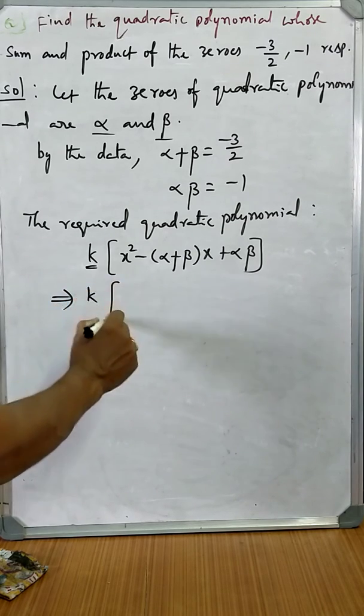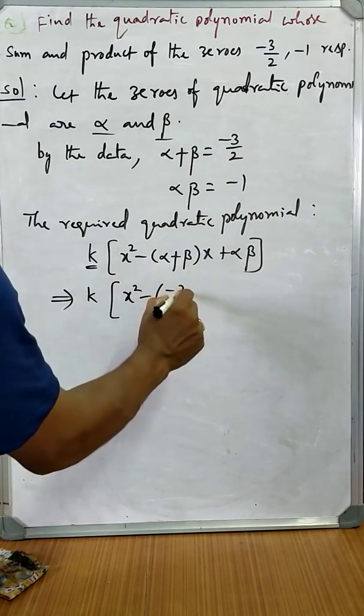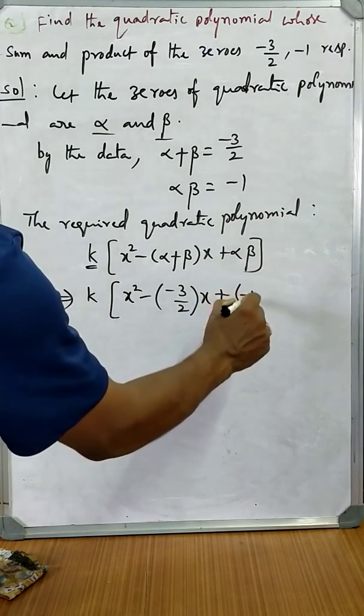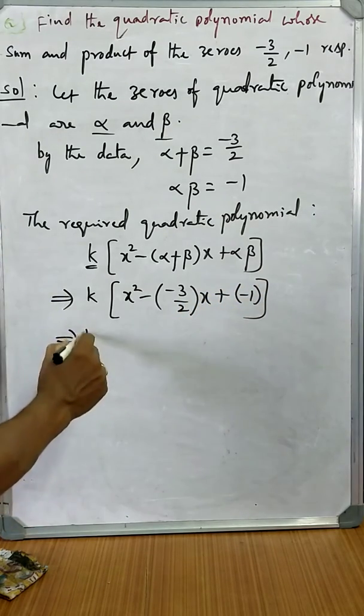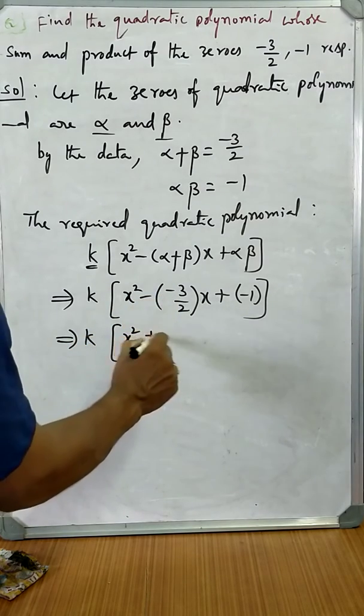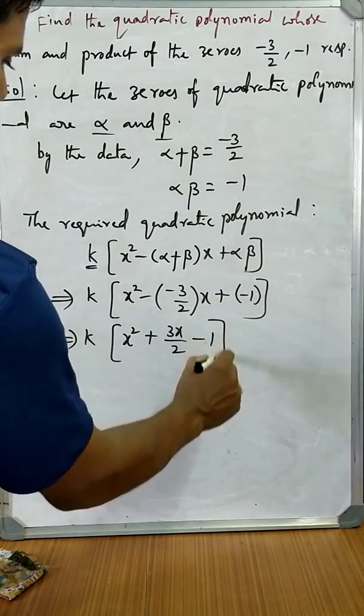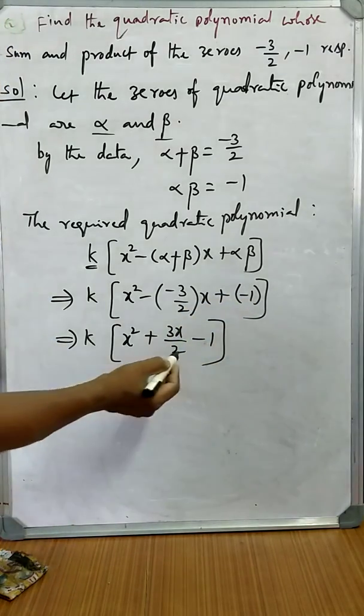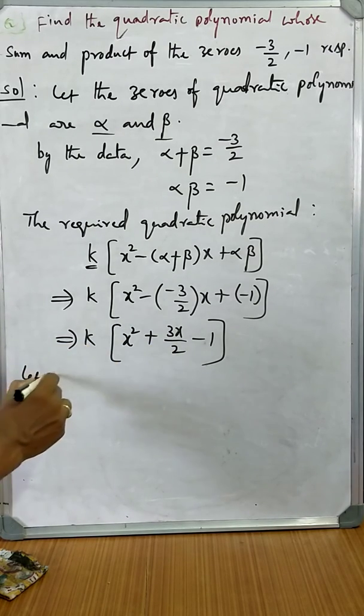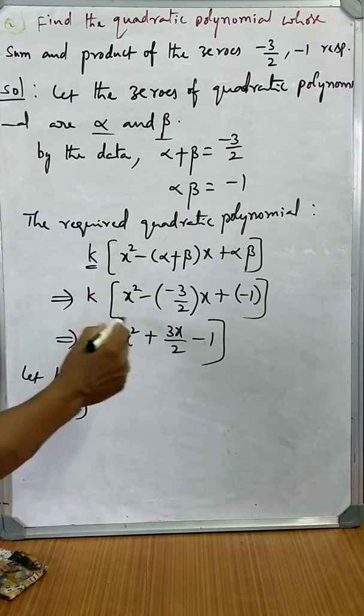k times x square minus minus three by two into x plus minus one. Here, the denominator is 2. To avoid the fractional coefficient, let k equal 2, then multiply each term by 2.